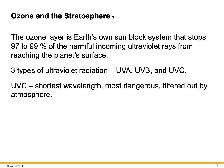The ozone layer is Earth's own sunblock system that stops 97 to 99% of the harmful incoming ultraviolet rays from reaching the planet's surface. There are three types of ultraviolet radiation: UVA, UVB, and UVC. UVC, the shortest wavelength and the most dangerous, is filtered out by the atmosphere.